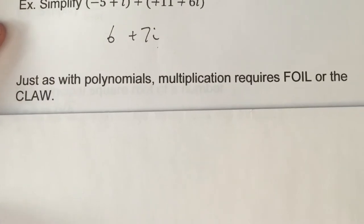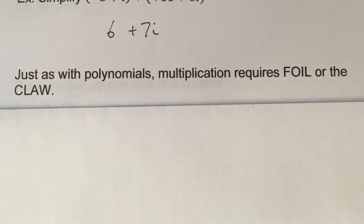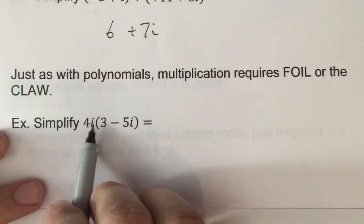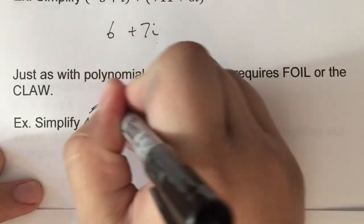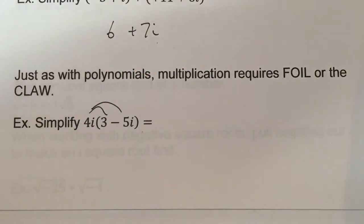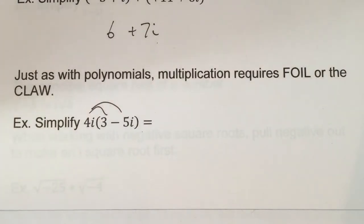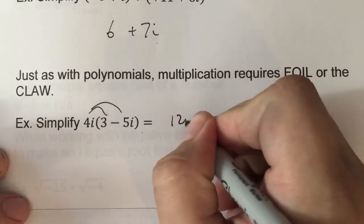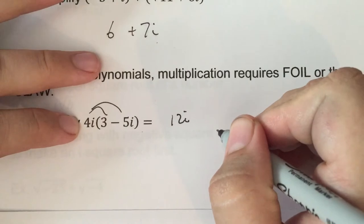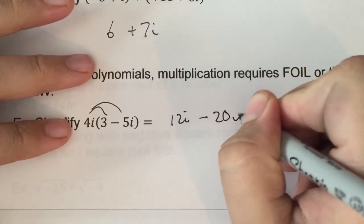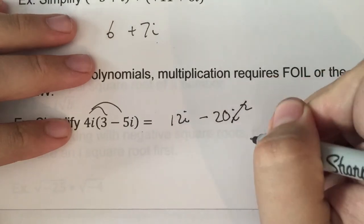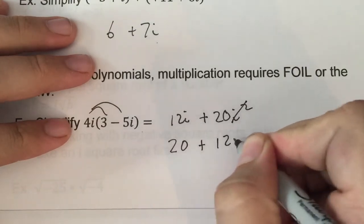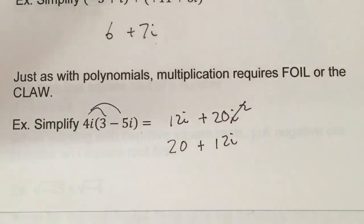Just as with polynomials, when we multiply we use FOIL — or as I learned it, the clock method. If we have a monomial (just a single term), we just distribute it in. So 4i times 3 gives 12i, and 4i times negative 5i gives minus 20i squared, which changes the sign to positive 20. We always write the real part first, then the imaginary — that's the proper form of a complex number.